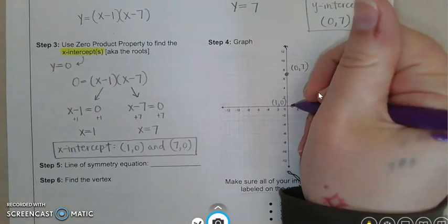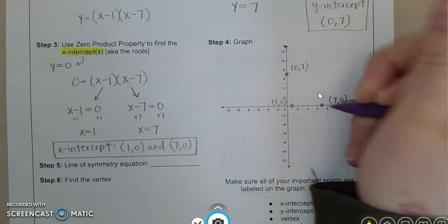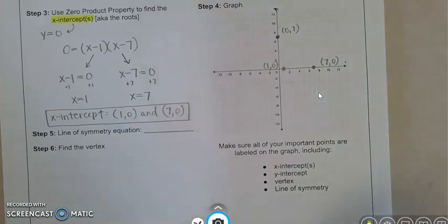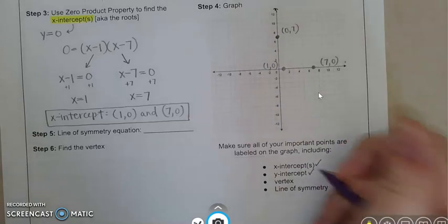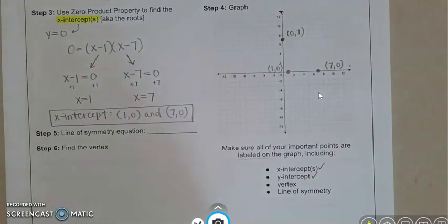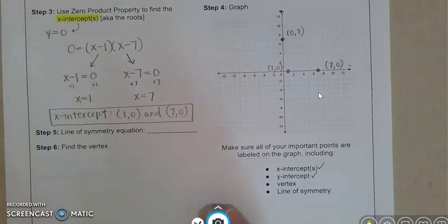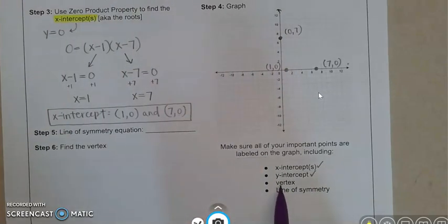So here's my three points. And maybe just to be extra, I'll put a check next to my y-intercept and a check next to my x-intercepts because I've done those. And now we're getting into the last two pieces, the vertex and the line of symmetry.